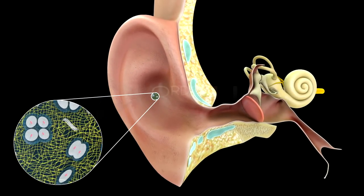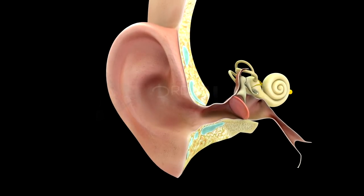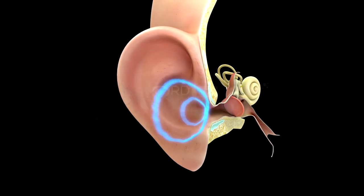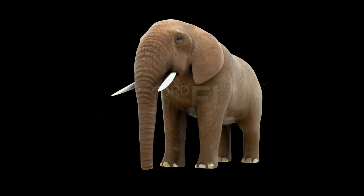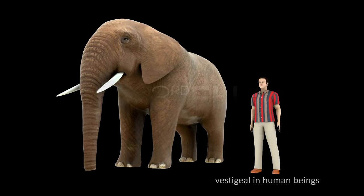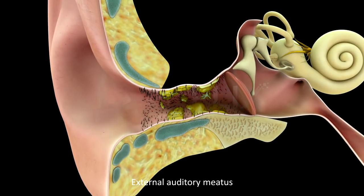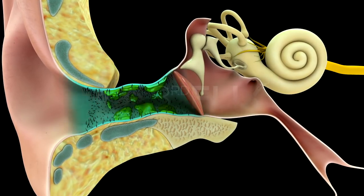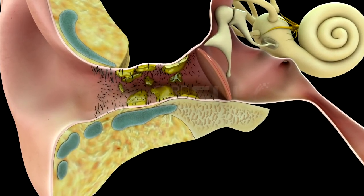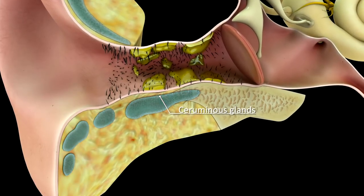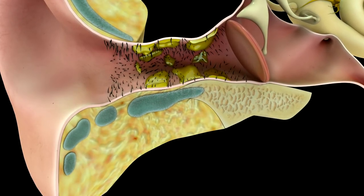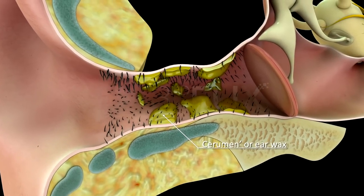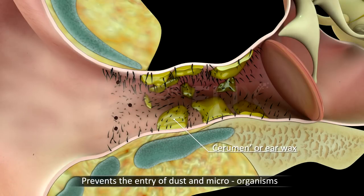The pinna is a flap of elastic cartilage covered by skin. It has a specific shape for collecting sound vibrations. The auricular muscles that can move the pinna in many animals are vestigial in human beings. The external auditory meatus is a curved tube that leads inwards and extends up to the tympanic membrane. It is lined by skin with fine hair and ceruminous glands, which are modified sebaceous glands that secrete cerumen or ear wax, preventing the entry of dust and microorganisms.